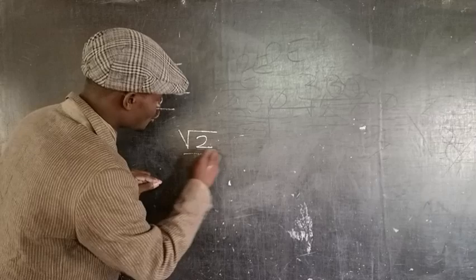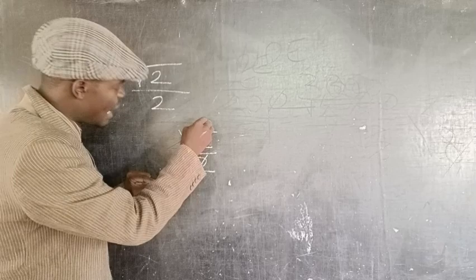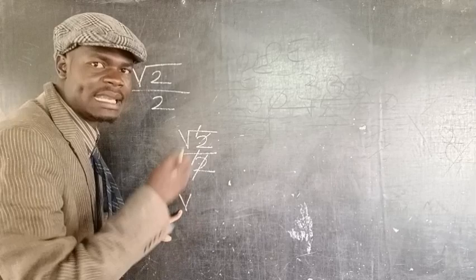This 2 goes with this 2. And this line goes with the upper line. So we remain with V. V is in Roman numbers. Let's change it to figures — V in figures means 5. The answer is 5.